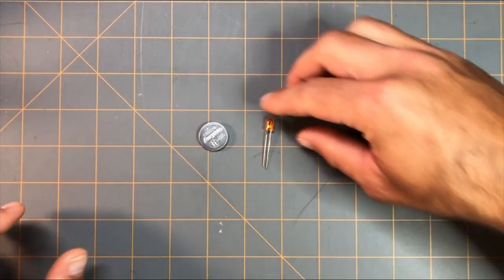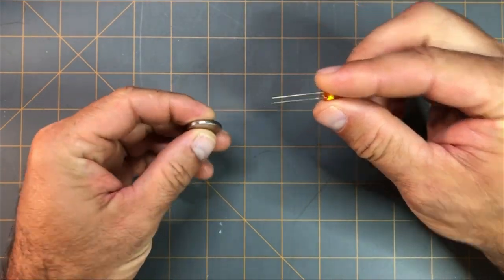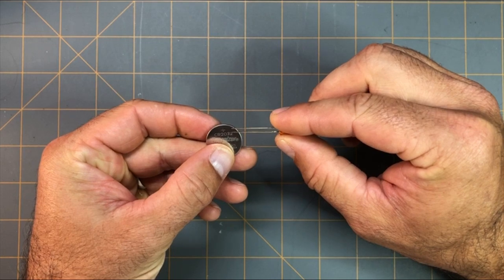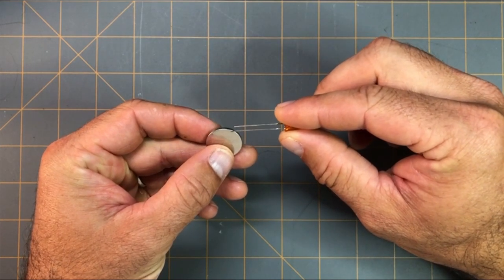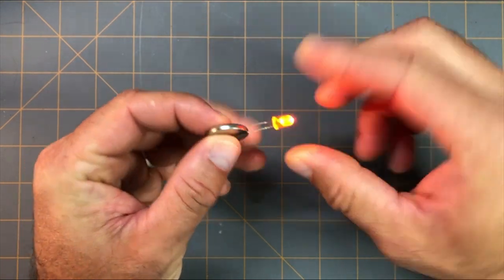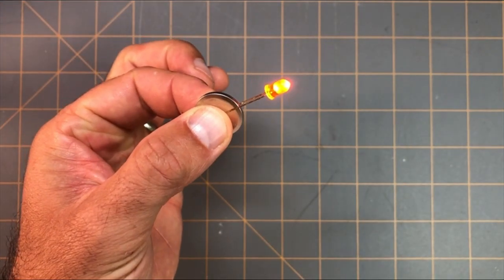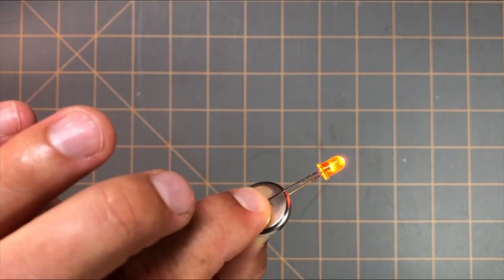So all we need to do is take the anode, touch it to the positive, and the cathode, and touch it to the negative, just like so. And that's an easy way to test to see if your LED lights up or to test the LED.